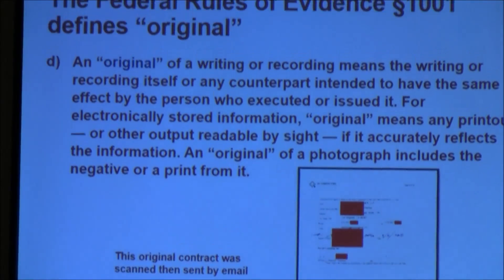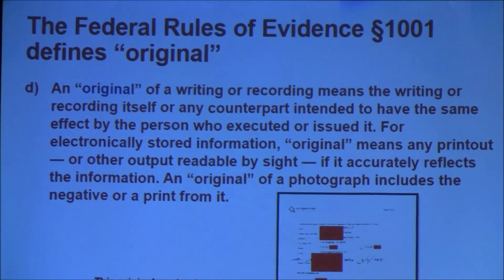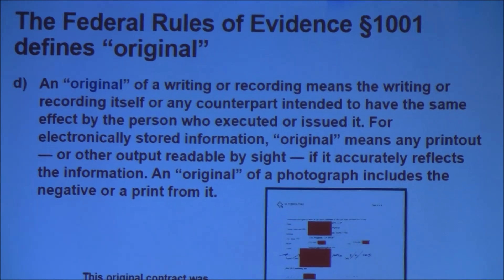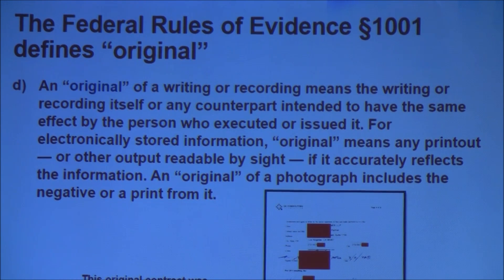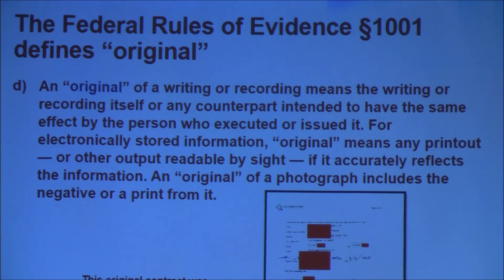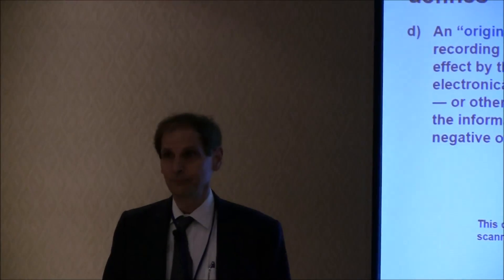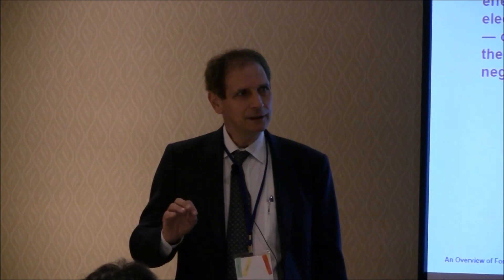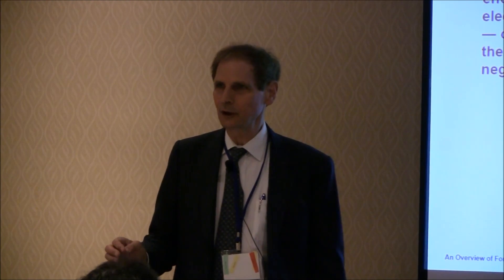Let's look at the Federal Rules' definition of an original. When I work with an attorney, typically what will happen is I'll email a client a contracting document. What they will do is print it out, sign it, scan it, and email that scanned document back to me. I'll print that, sign it, scan it, and email it back to them. Now I have a document with my original ink signatures on it, and the attorney has a document with their original ink signatures on it. We both have an electronic document that has images of both signatures on it.